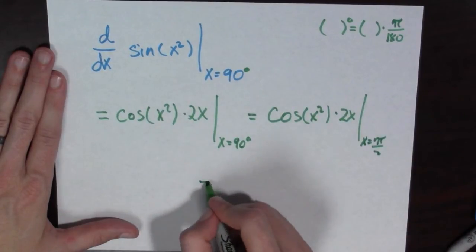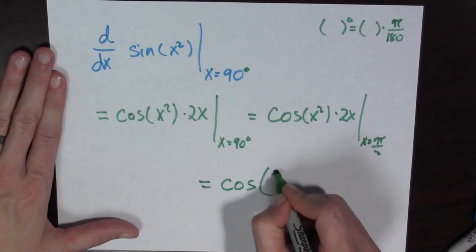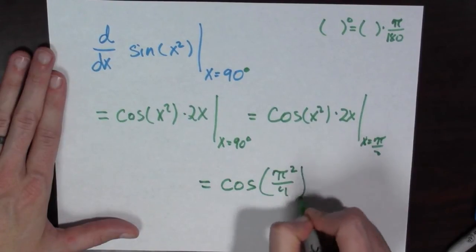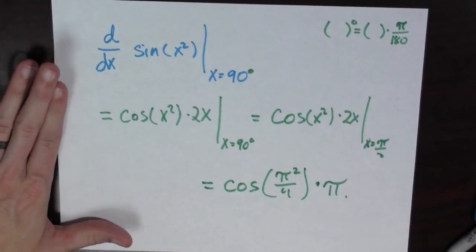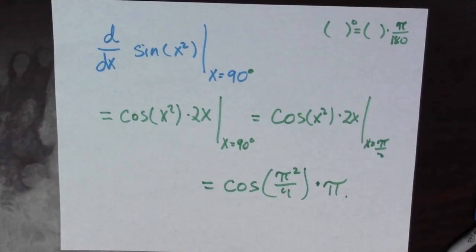And so this is going to give us the same answer, cosine of pi squared over 4, all times pi, which is the correct answer.